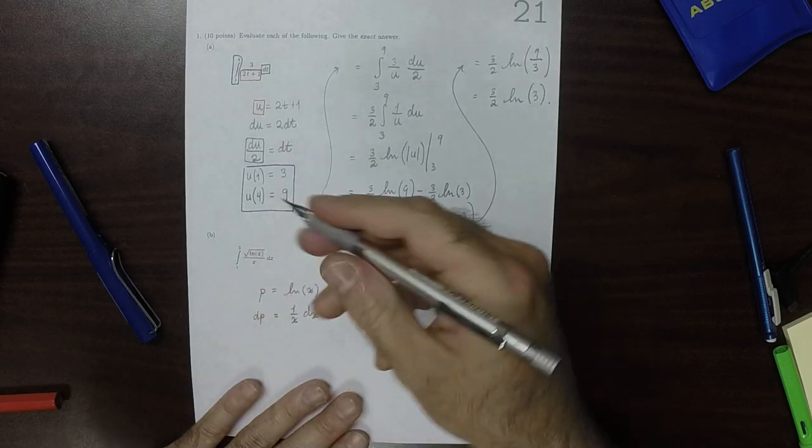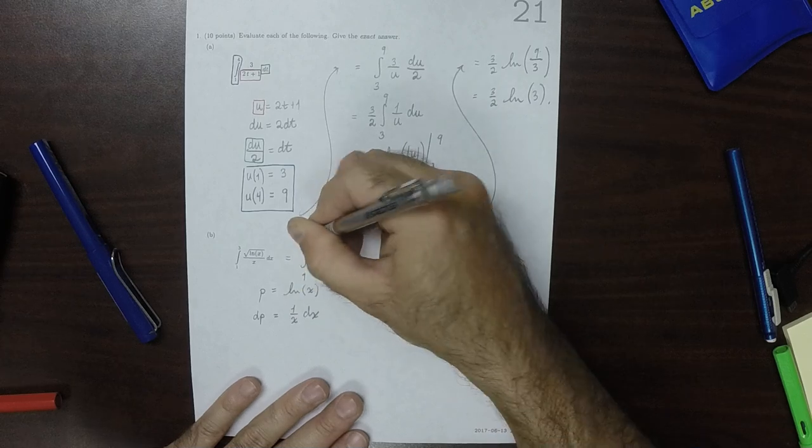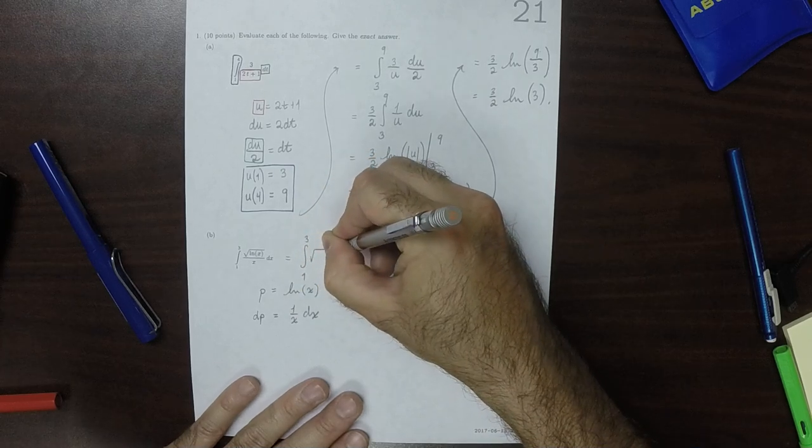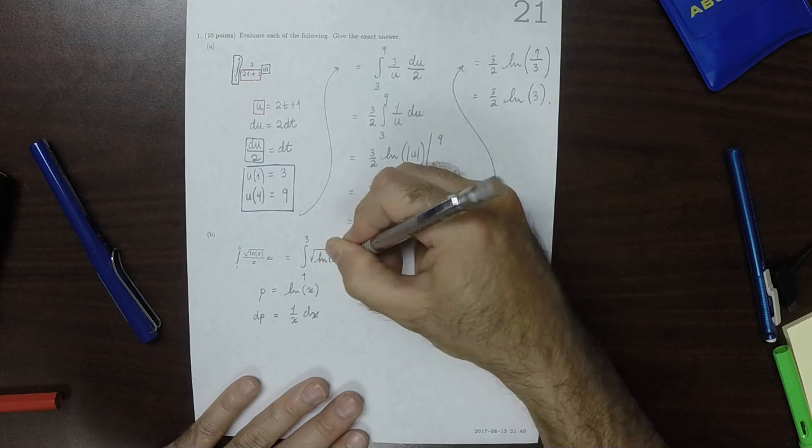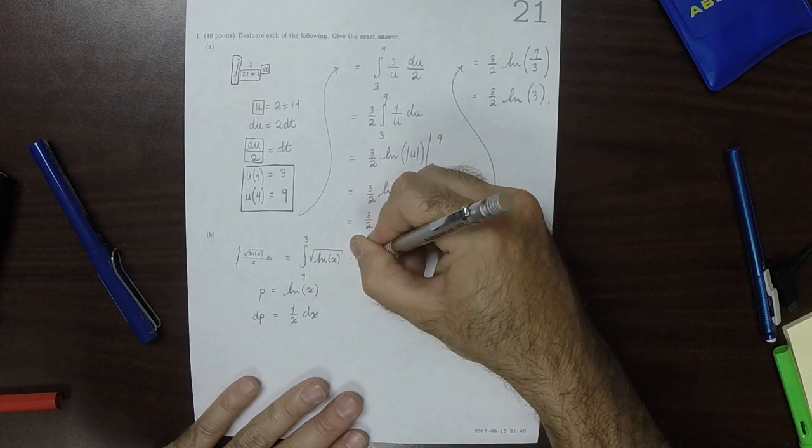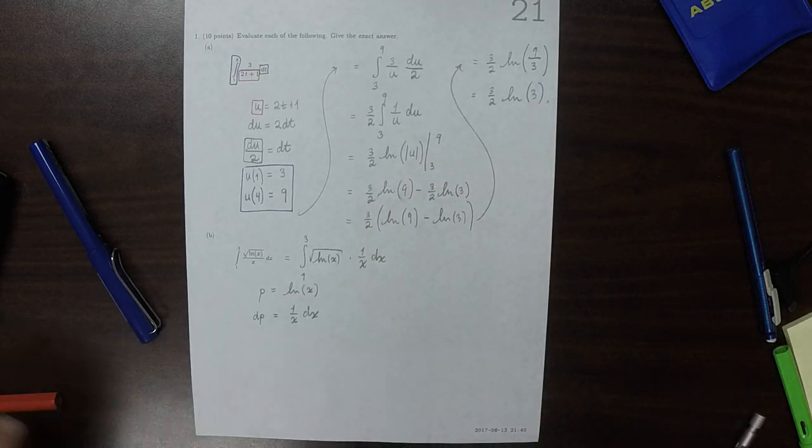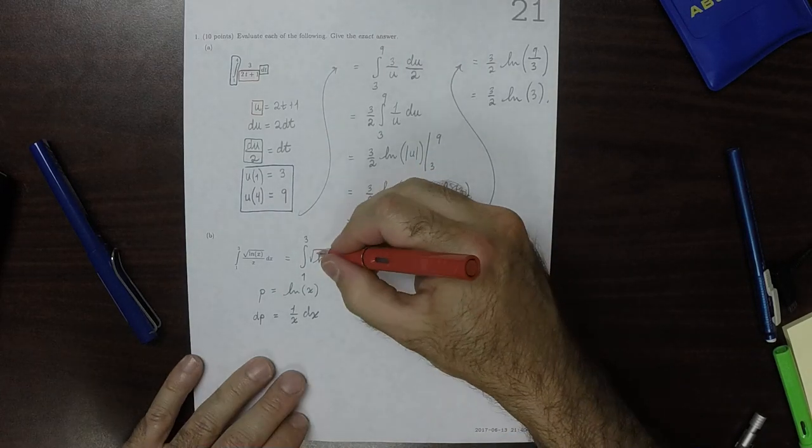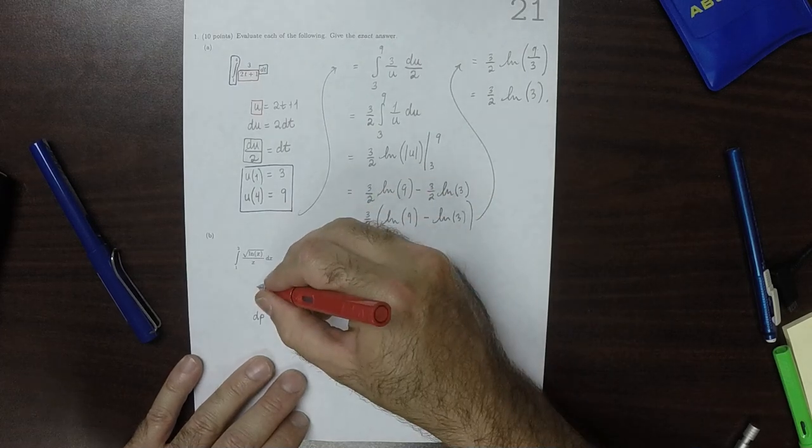Well, this integral, if it's not clear, could be rewritten as 1 third square root log x, multiply by 1 over x dx. So, that's more or less exactly what we want. We've covered the log with p.